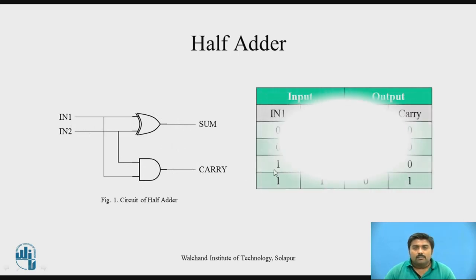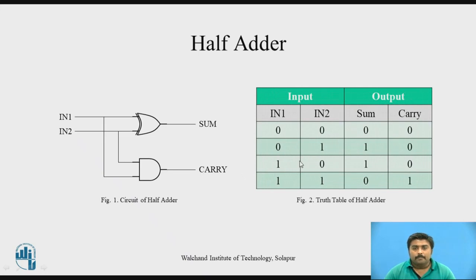This table shows the truth table. So inputs and outputs: sum and carry. Because of 2 inputs you have 4 combinations: 0 0, 0 1, 1 0, and 1 1. For 0 0, sum is 0 and carry is 0. For 0 1, sum is 1 and carry is 0. For 1 0, sum is 1 and carry is still 0. And for 1 1, sum is 0 and carry is 1.